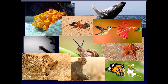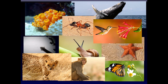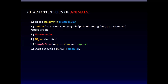The animal kingdom is vast, as you know, and includes all these various different kinds of animals. So how is it that so many different living things can be classified in the same category? In other words, what are the characteristics of animals compared to plants, fungi, protists, and bacteria? Well, there are six characteristics of animals that we shall study.